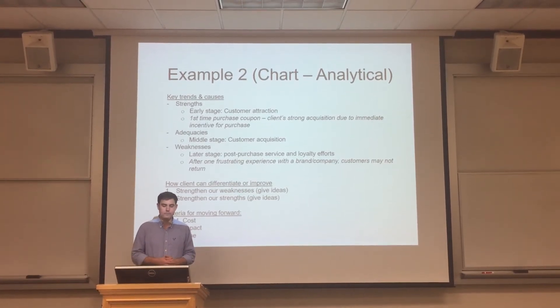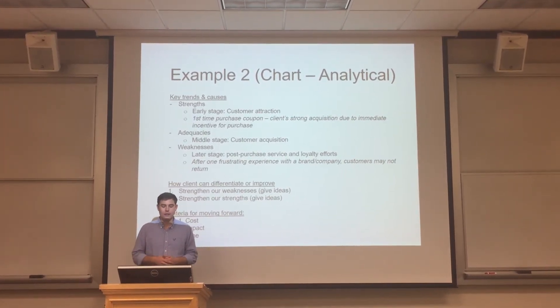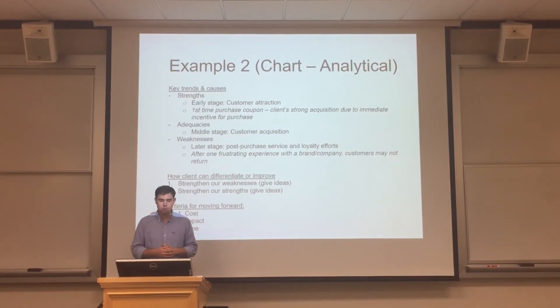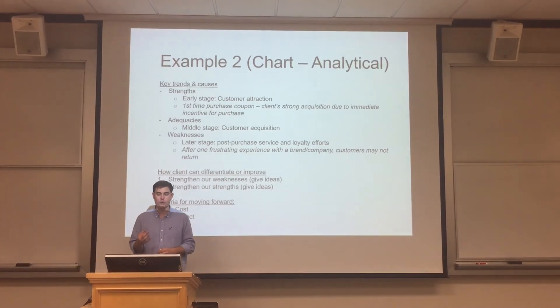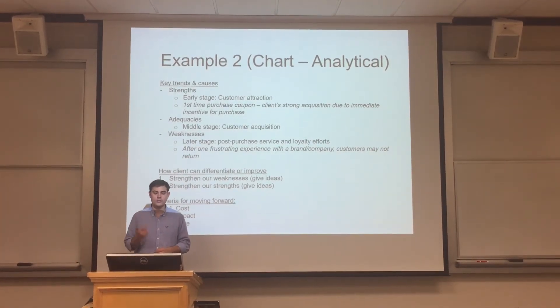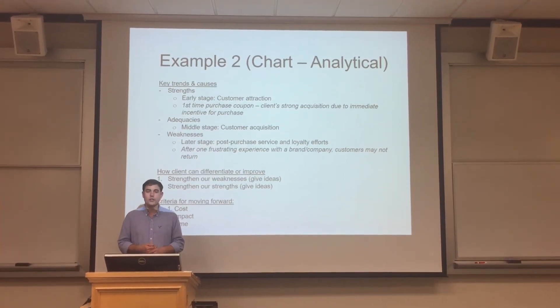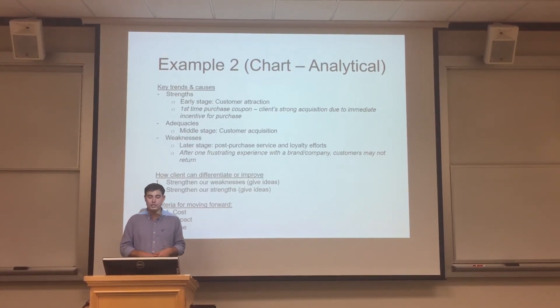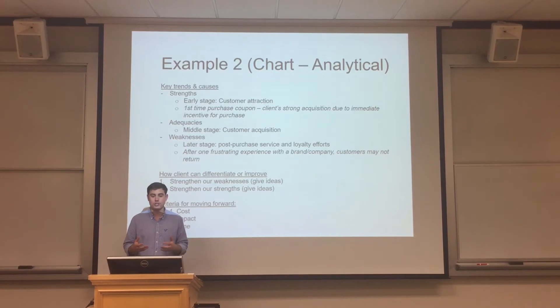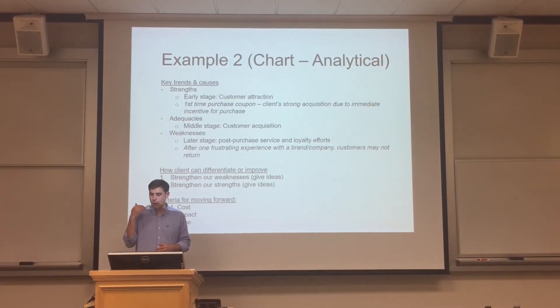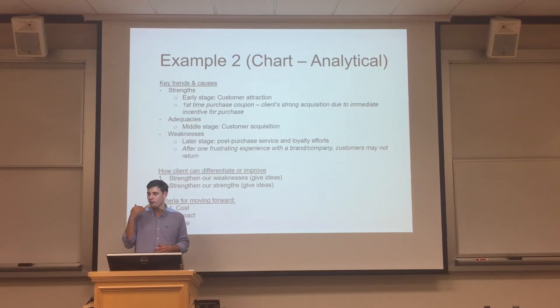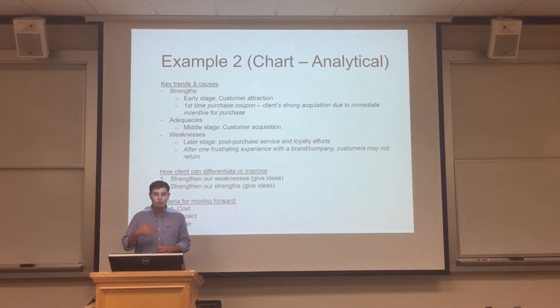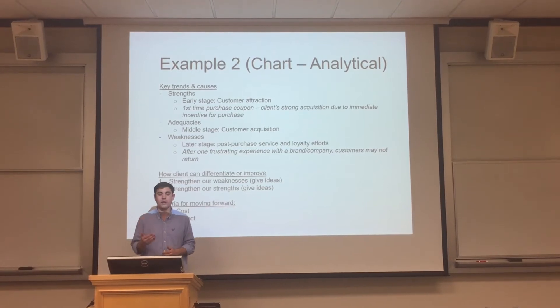I would start by saying, the first question you asked is what are the key trends and causes of those trends? I have broken down key trends into three different categories, strengths, adequacies, and weaknesses. Strengths are the things that our client is doing really well, and the stage in which they're excelling is customer attraction. In fact, they are consistently doing better than the competition across all the different categories within customer attraction.